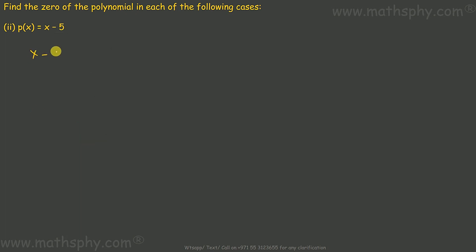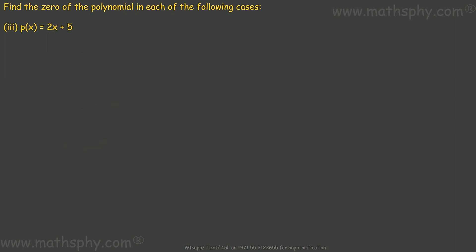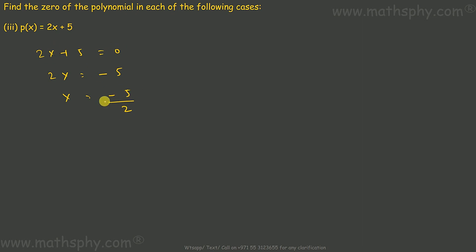For x minus 5, x equals to 5. If I take x as 5, then 5 minus 5 gets you zero. So the zero for this polynomial would be 5. For 2x plus 5 equals to zero, 2x is equal to minus 5, so x equals to minus 5 over 2. If you replace x with negative 5 over 2 it gets you zero, so negative 5 over 2 is a zero for this polynomial.